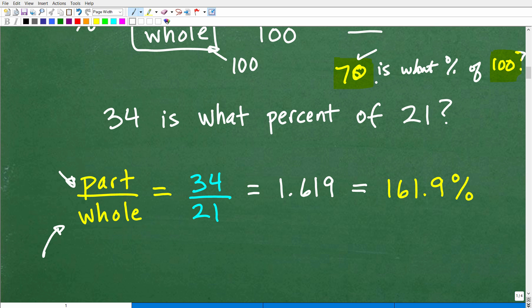So 21 here is the whole. So we would kind of use this example. 70 is what percent of 100? We would write the fraction 70 over 100. In this case, we're writing a fraction 34 over 21. And when we do that, 34 divided by 21, using our calculator, we're going to get the decimal 1.619.